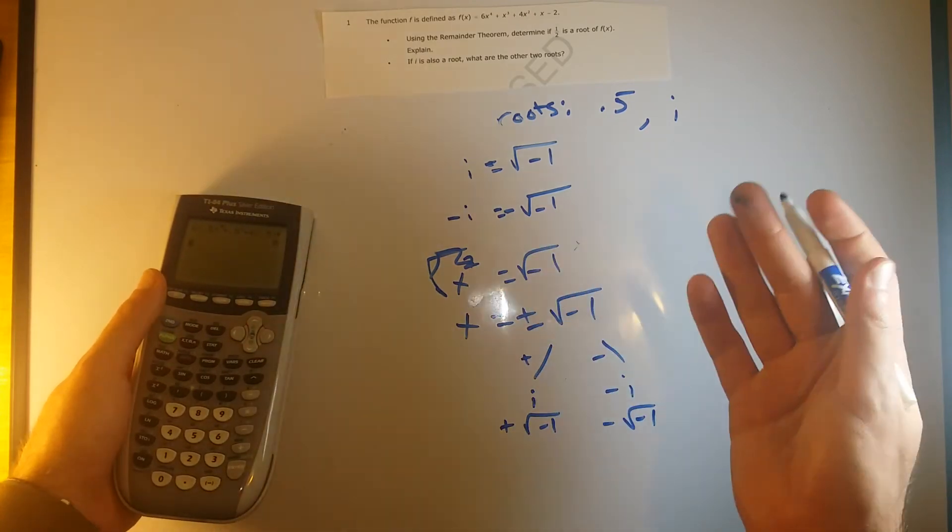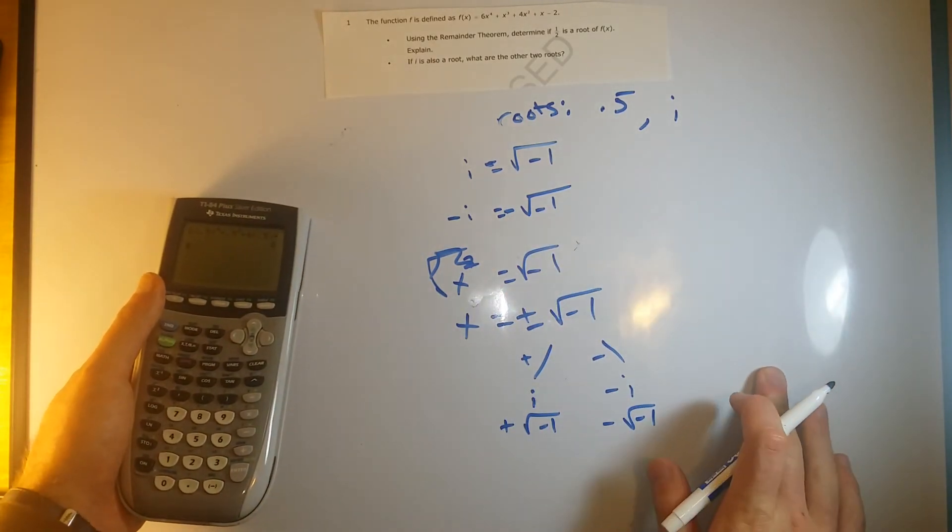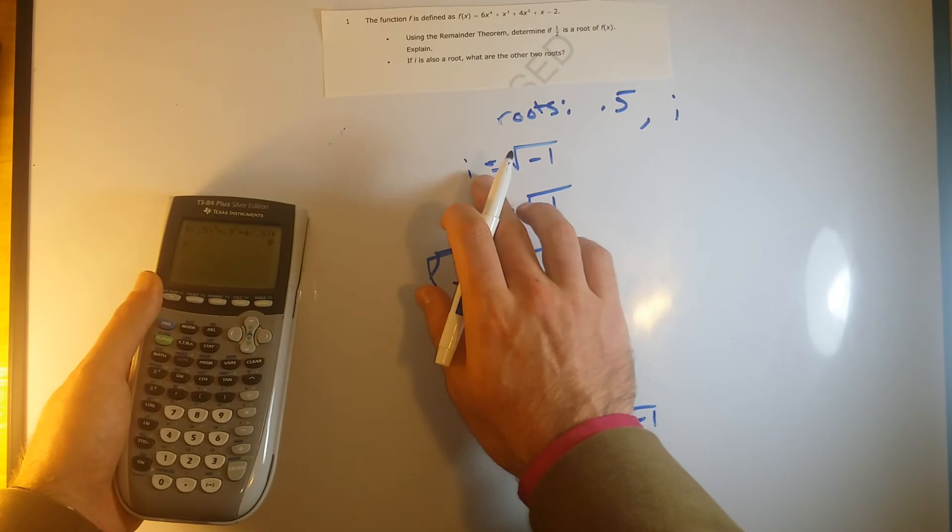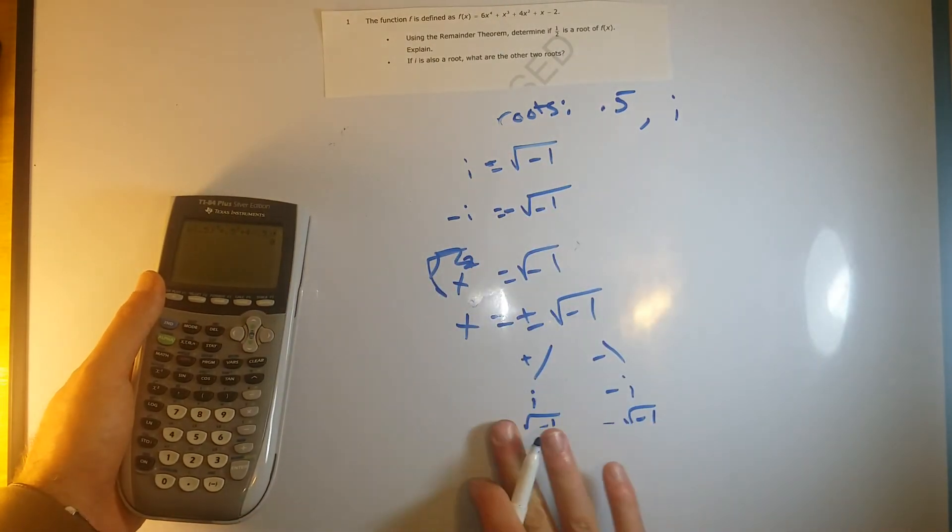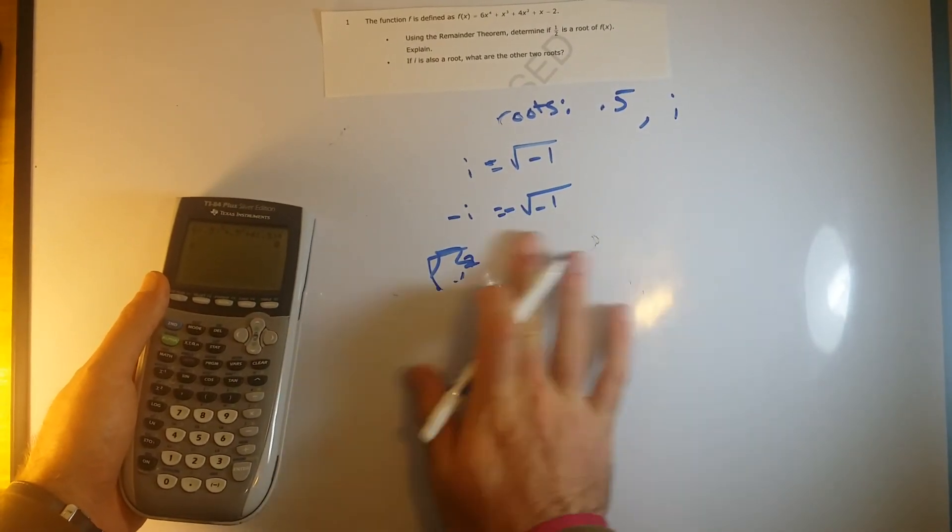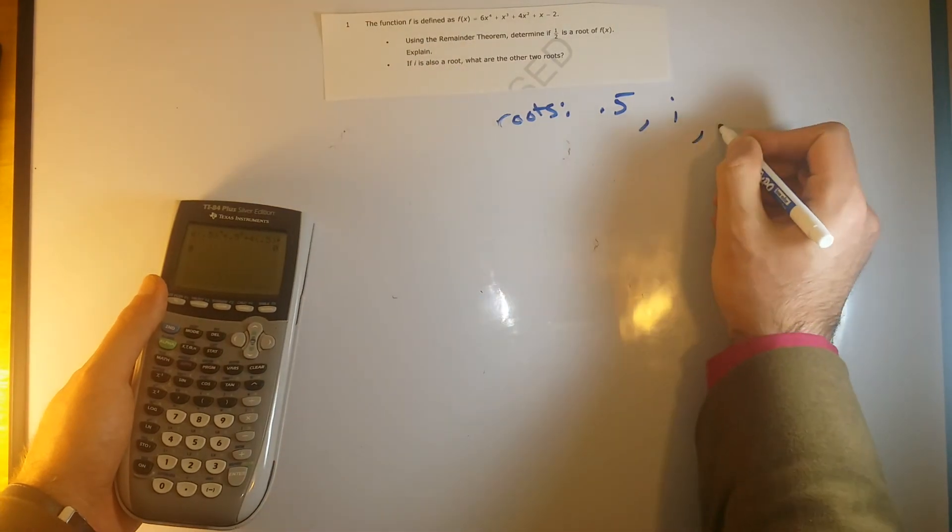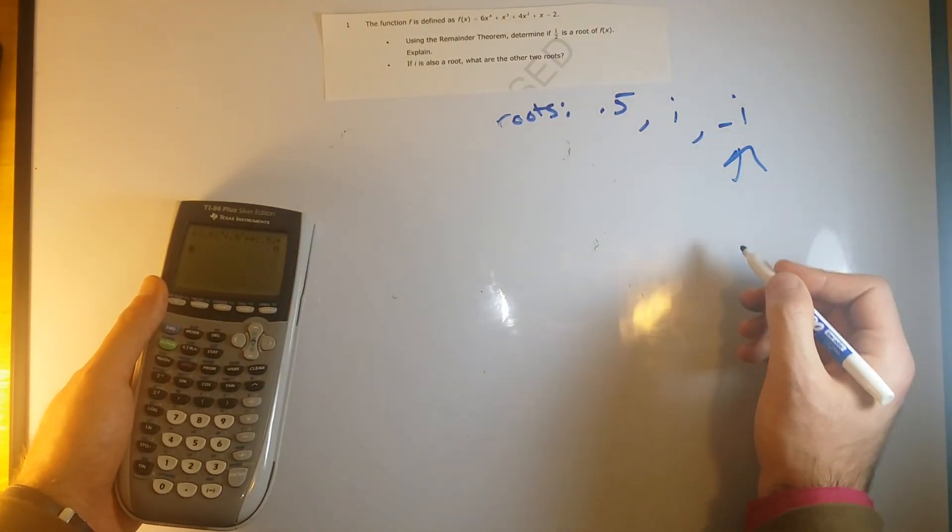These mean the same thing, but that's why you end up getting two roots whenever you have, if you know you have one imaginary root, that means you're going to have to have two. So that's, one of our roots will be negative i, for the reason we just said.